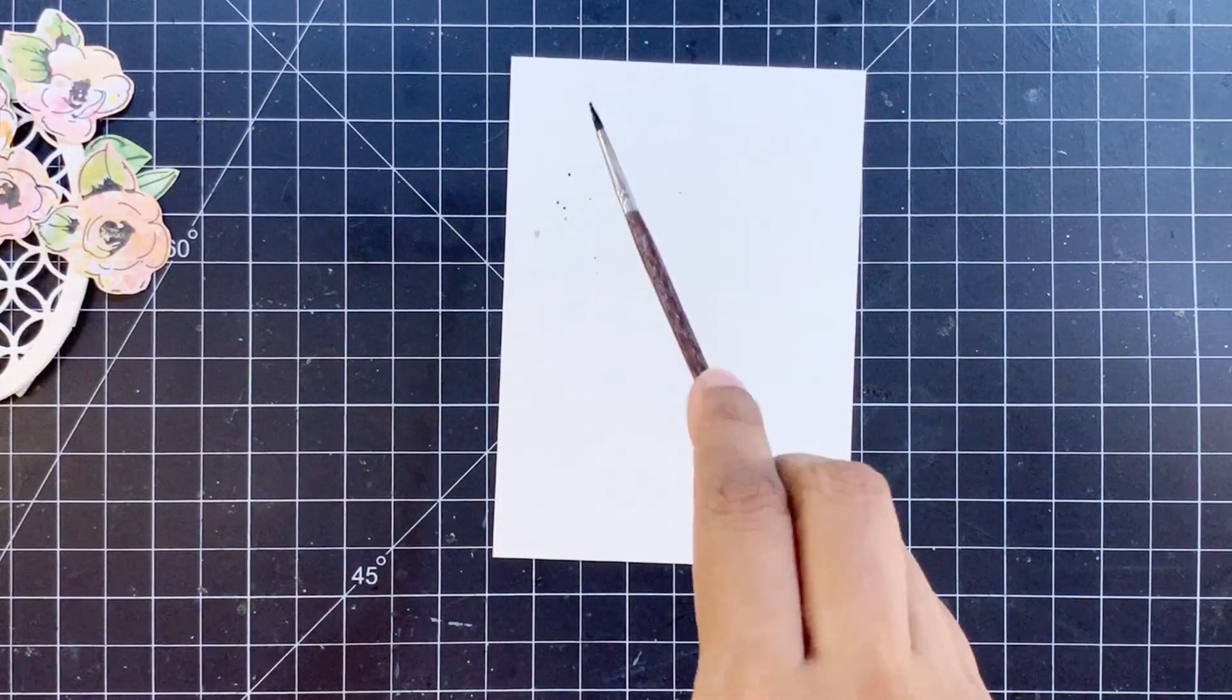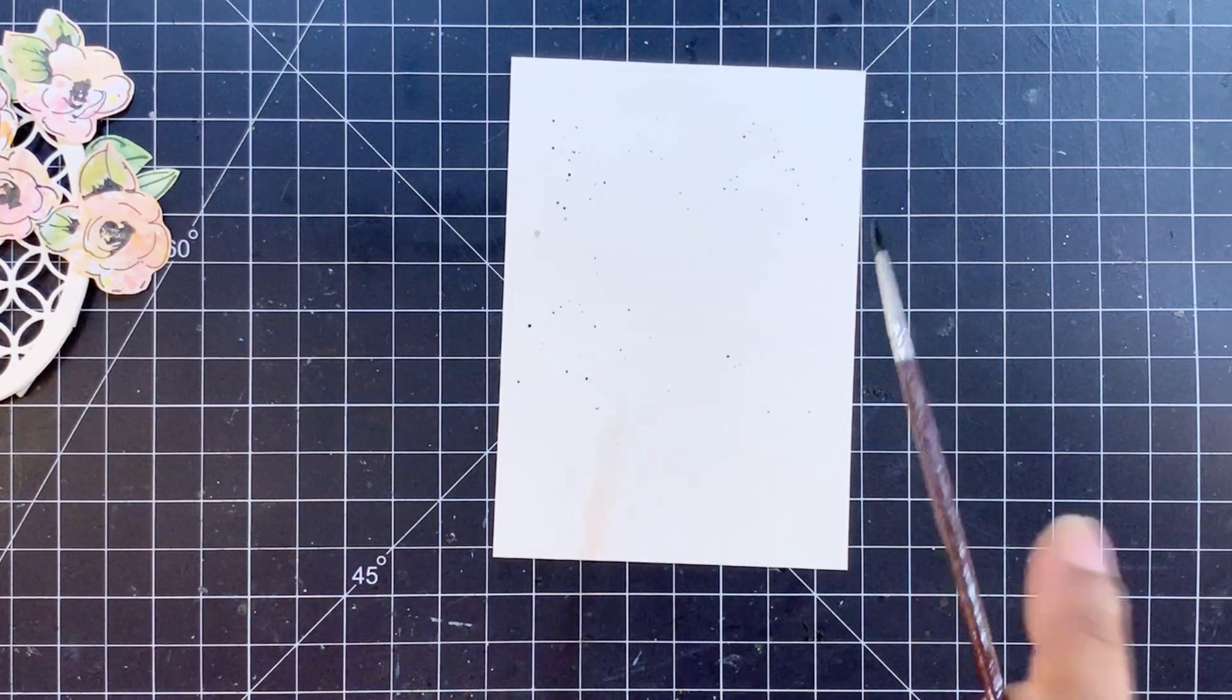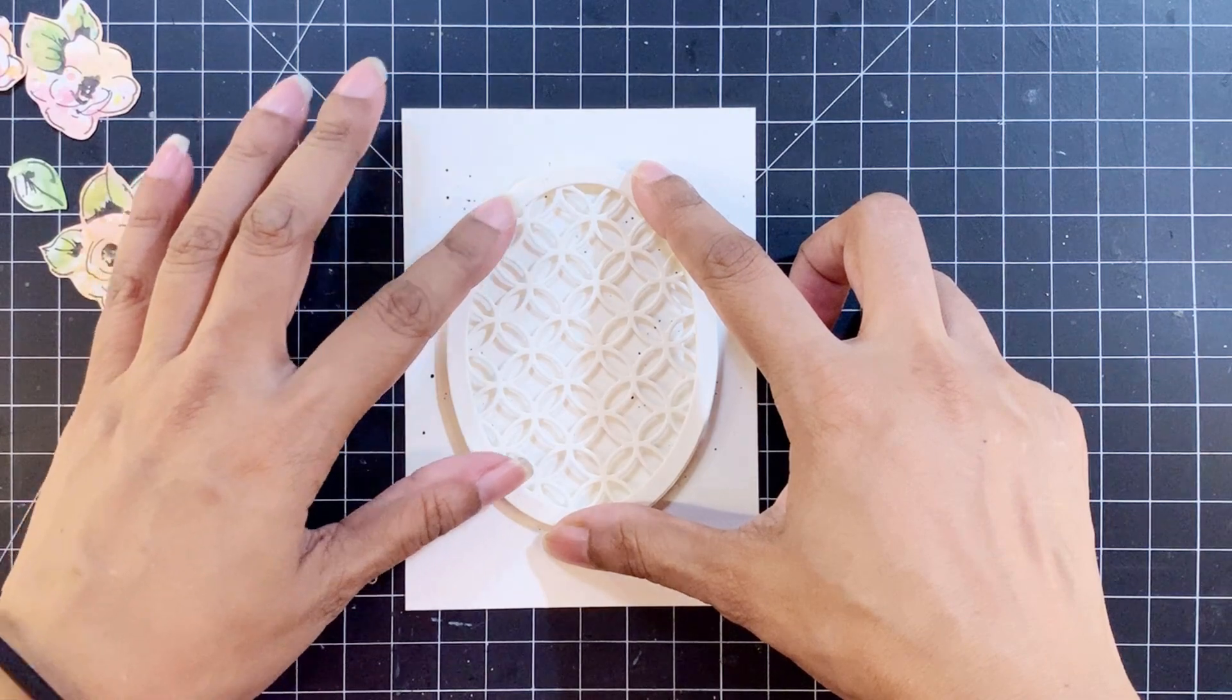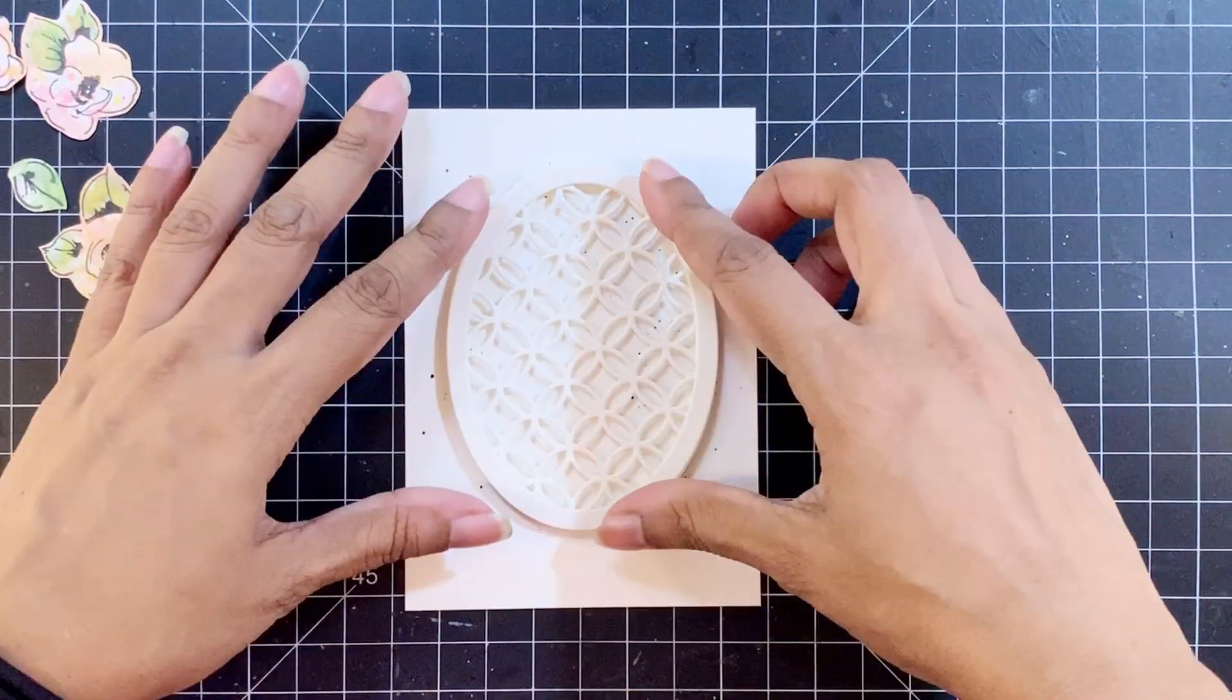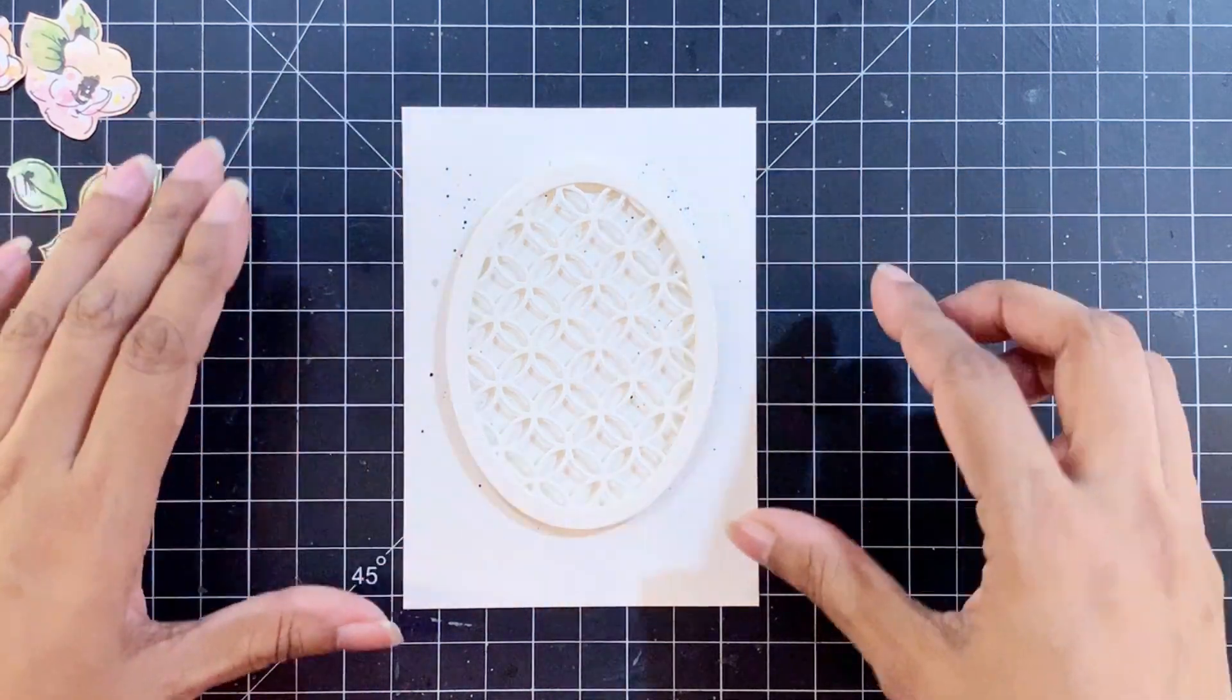For my card front I'll first add very fine black paint splatters from the 36 pan watercolor set. Then I'll adhere the lacy oval frame onto the card front.